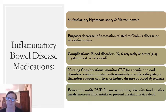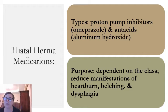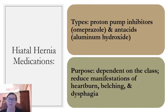Hiatal hernia medications — proton pump inhibitors like omeprazole and antacids like aluminum hydroxide — are used because hiatal hernia can be the underlying cause of reflux and hypersecretory disorders. The purpose and complications depend on the drug class being used, with the goal of reducing manifestations like heartburn, belching, and dyspepsia. Probiotics are dietary supplements used to treat irritable bowel syndrome, ulcerative colitis, C. diff-associated diarrhea, and rotavirus diarrhea in children. Complications can include flatulence, bloating, and infection in immunocompromised patients. Probiotics need to be taken two hours apart from antibiotics.